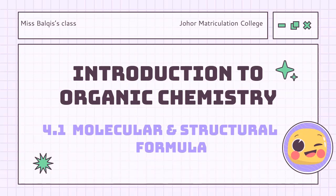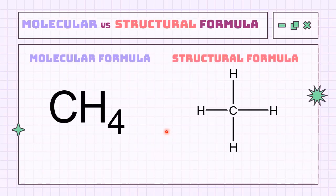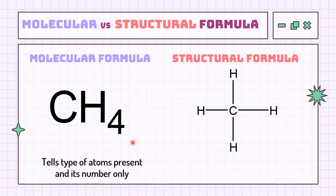The first subtopic is molecular and structural formula. Shown on the slide, the molecular formula on the left and structural formula on the right. Molecular formula tells us the type of atoms present and its number only. So in CH4, we could see we have one carbon and four hydrogen.